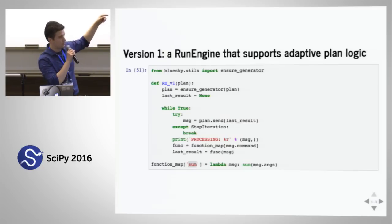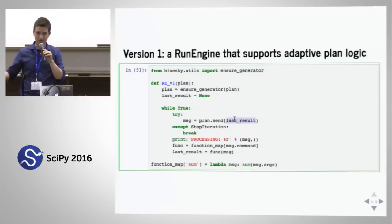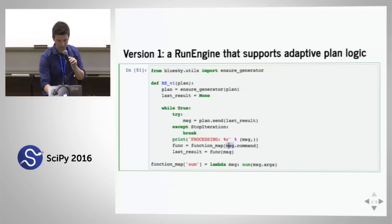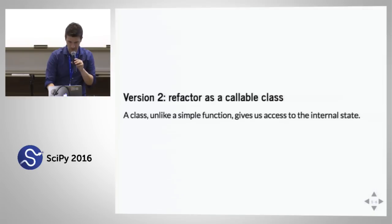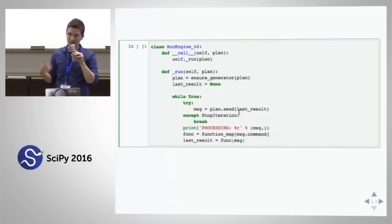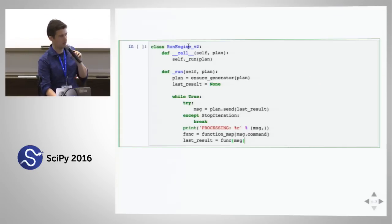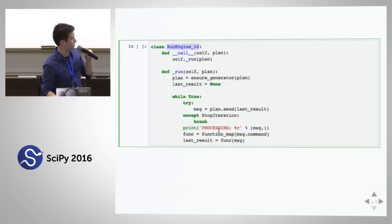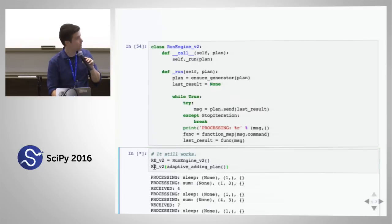In order to seed a coroutine in Python, you send in None first, which cues the plan to give its first message. We get the message, look up which command it is, process the message, get the result, go back to the top of the loop, and send the result back in. Version two simply takes version one and refactors it from a function into a callable class, because a class lets us inspect internal state from outside. The body of the code doesn't change — we've just turned it into a callable class so we can make an instance and call it.